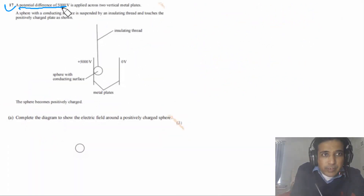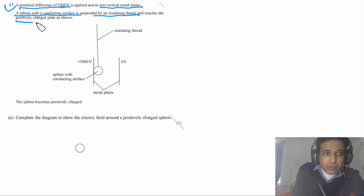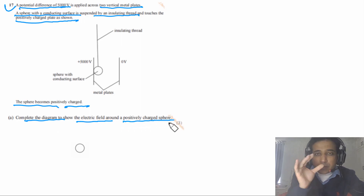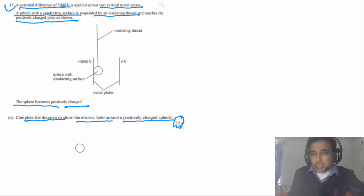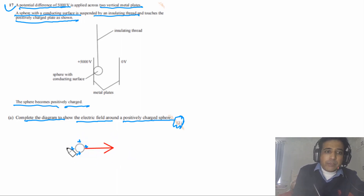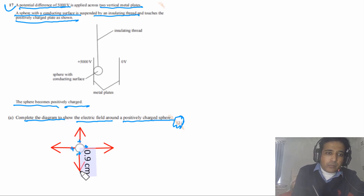Question 17: a potential difference of 5000 V is applied across two vertical metal plates. A sphere with a conducting surface is suspended by an insulating thread and touches the positively charged plate, becoming positively charged. Part A asks to complete the diagram showing the electric field around the positively charged sphere — worth three marks. Since the sphere is positive, the electric field lines point radially outward from the sphere. Draw lines starting from the surface, perpendicular to it, pointing away.